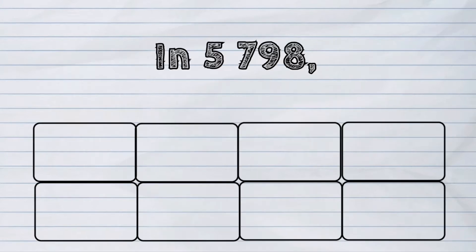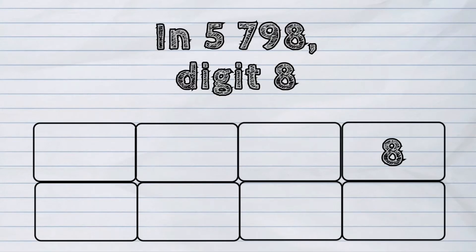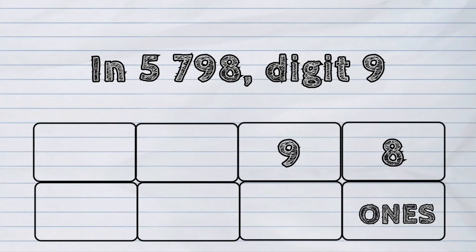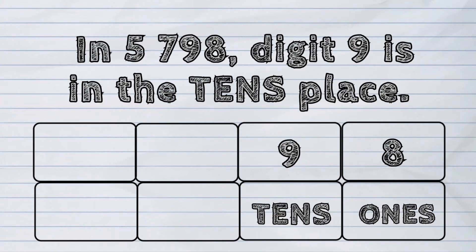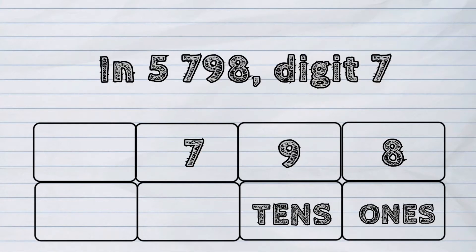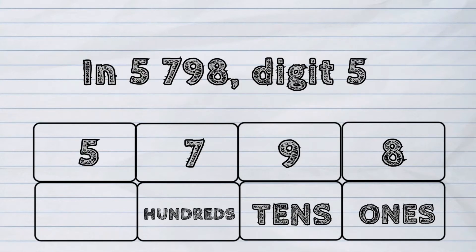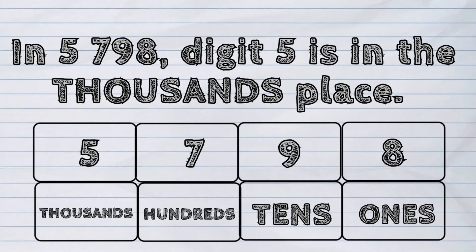For example, in 5798, digit 8 is in the ones place. Digit 9 is in the tens place. Digit 7 is in the hundreds place. And digit 5 is in the thousands place.